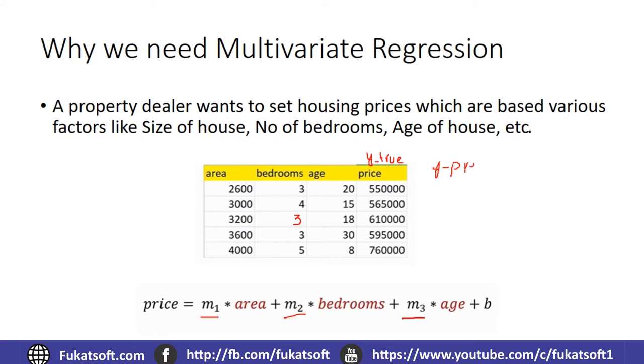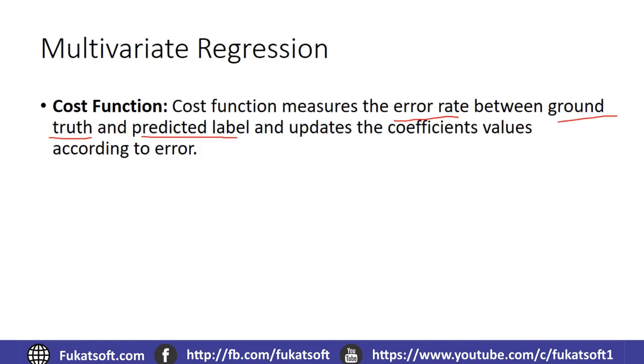When our model is optimized, it will be the best model when our Y predicted, which is the value the model predicts, and the true value has minimal error. So the cost function basically is the measure of the error, which tells us that our model is good or bad.